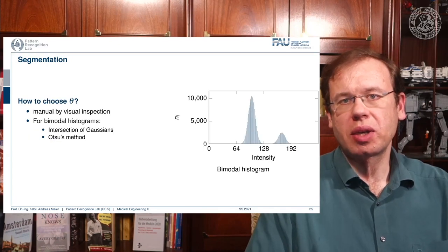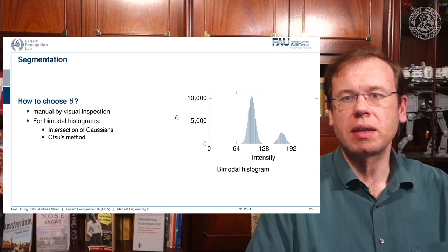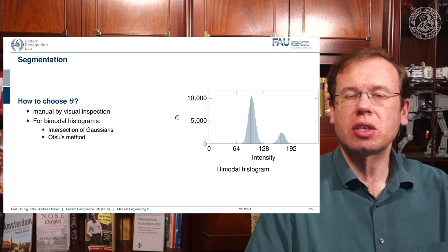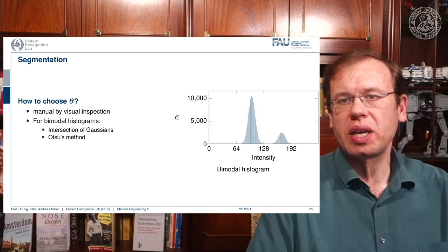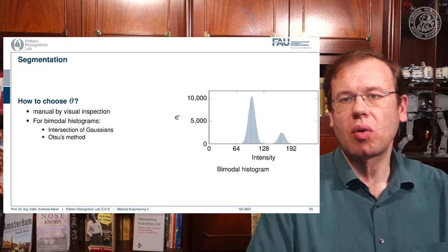So here we have an example histogram, and here we only have two objects. And here we would like to choose our threshold such that the two Gaussian bell shapes here are being separated. So here we can for example take the intersection of Gaussians, or the so-called Otsu's method.